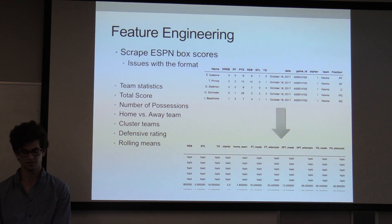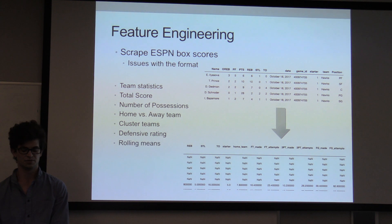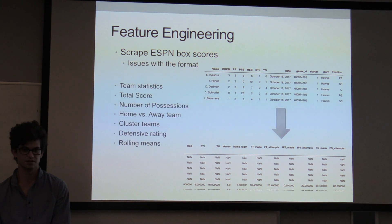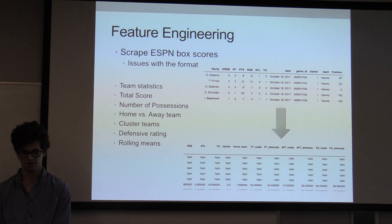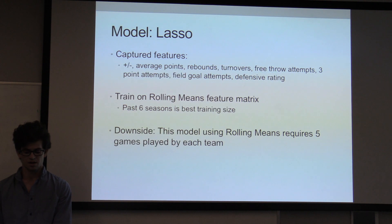I clustered teams based off of their statistics to determine their play styles, and I also added in a defensive rating. The rolling means was pretty tricky, because if you just use it out of the box, it has the current game statistics involved in that calculation. So you need to shift down one row in order to have only the previous games for that prediction.